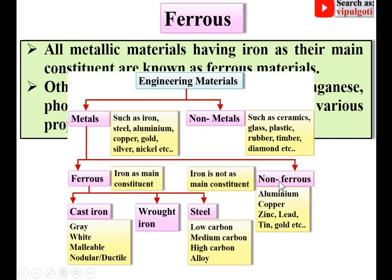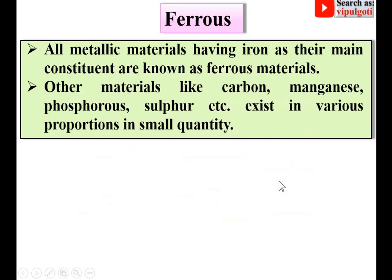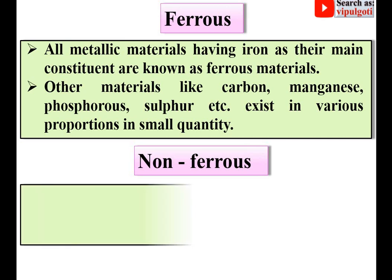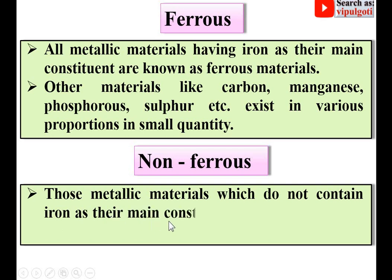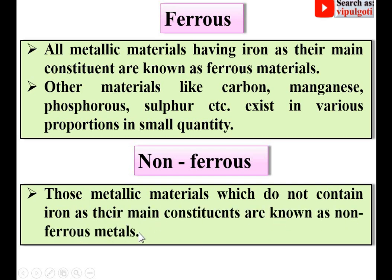Those metallic materials which do not contain iron as their main constituent are known as non-ferrous metals. So, for ferrous metals, iron is the main constituent, whereas for non-ferrous metals, iron is not the main constituent.